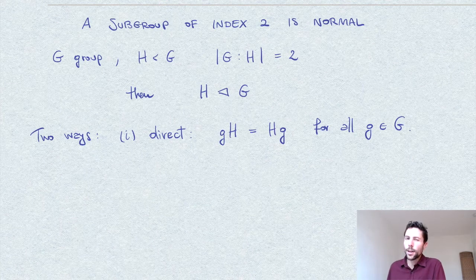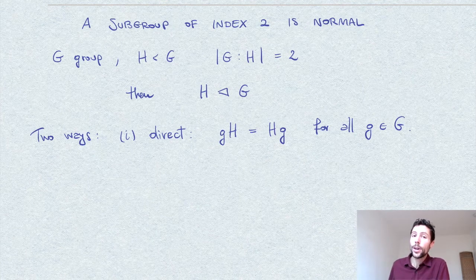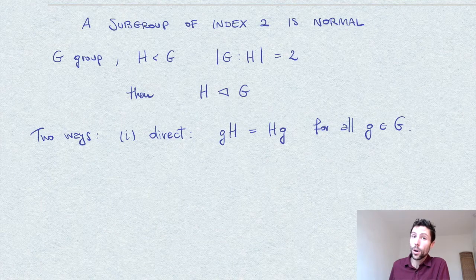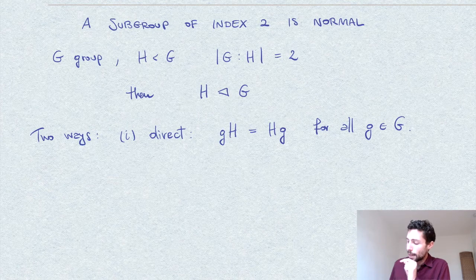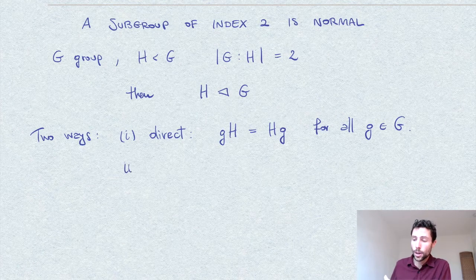Or we can take a slightly more sophisticated approach and use what we know about kernels, namely that the kernels are always normal. And if we manage to find a morphism which has precisely H as the kernel, then we are done.